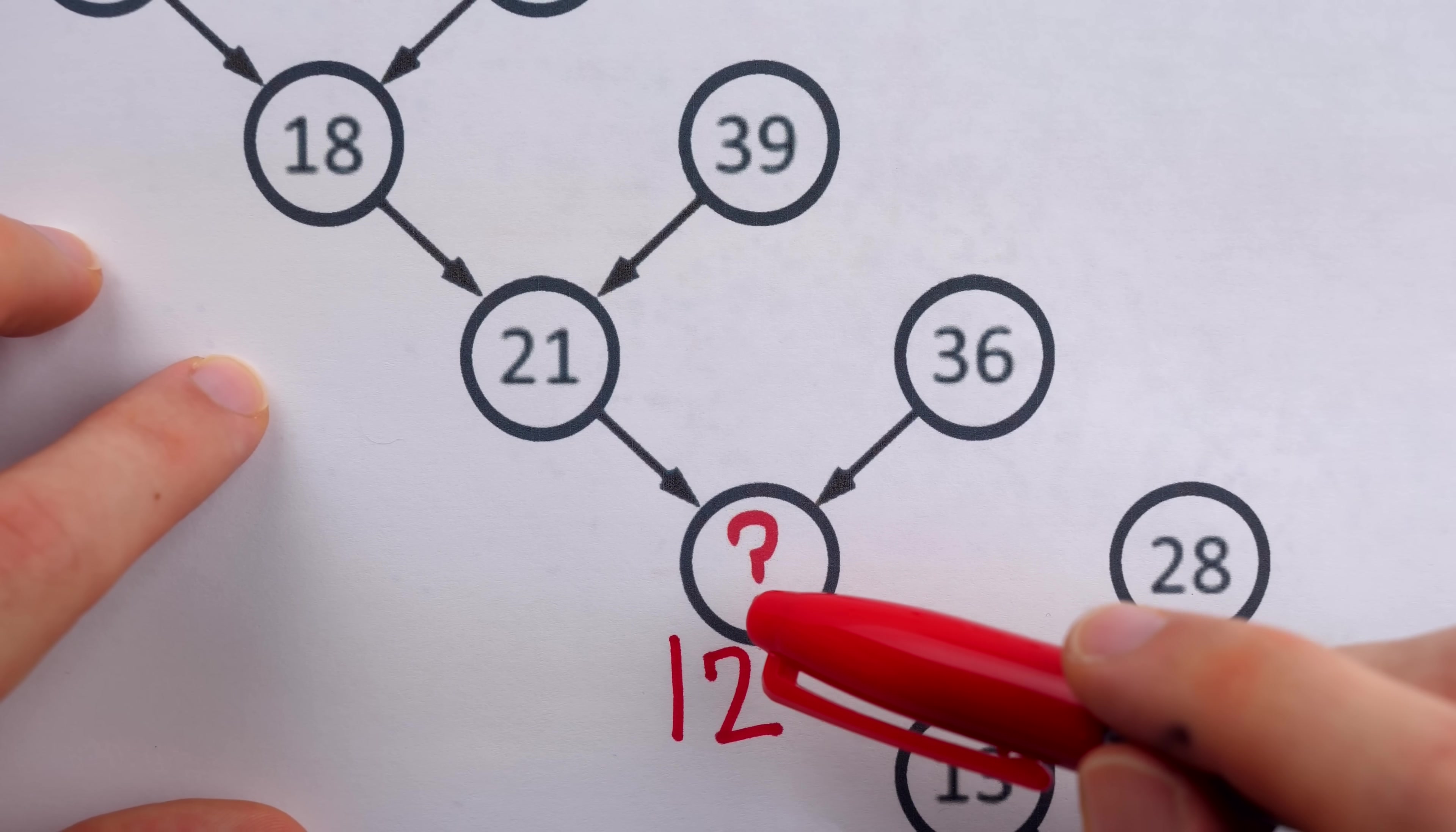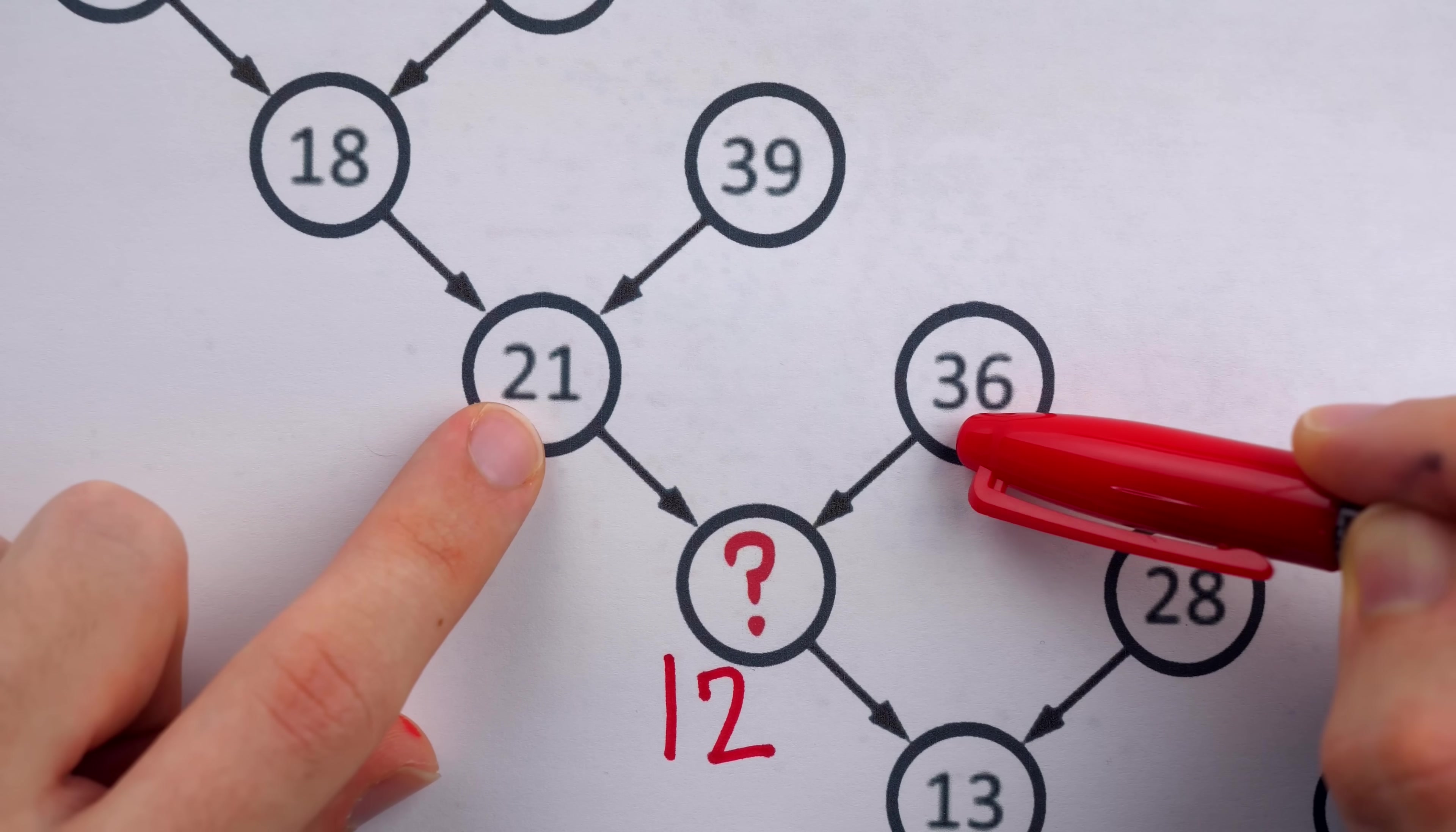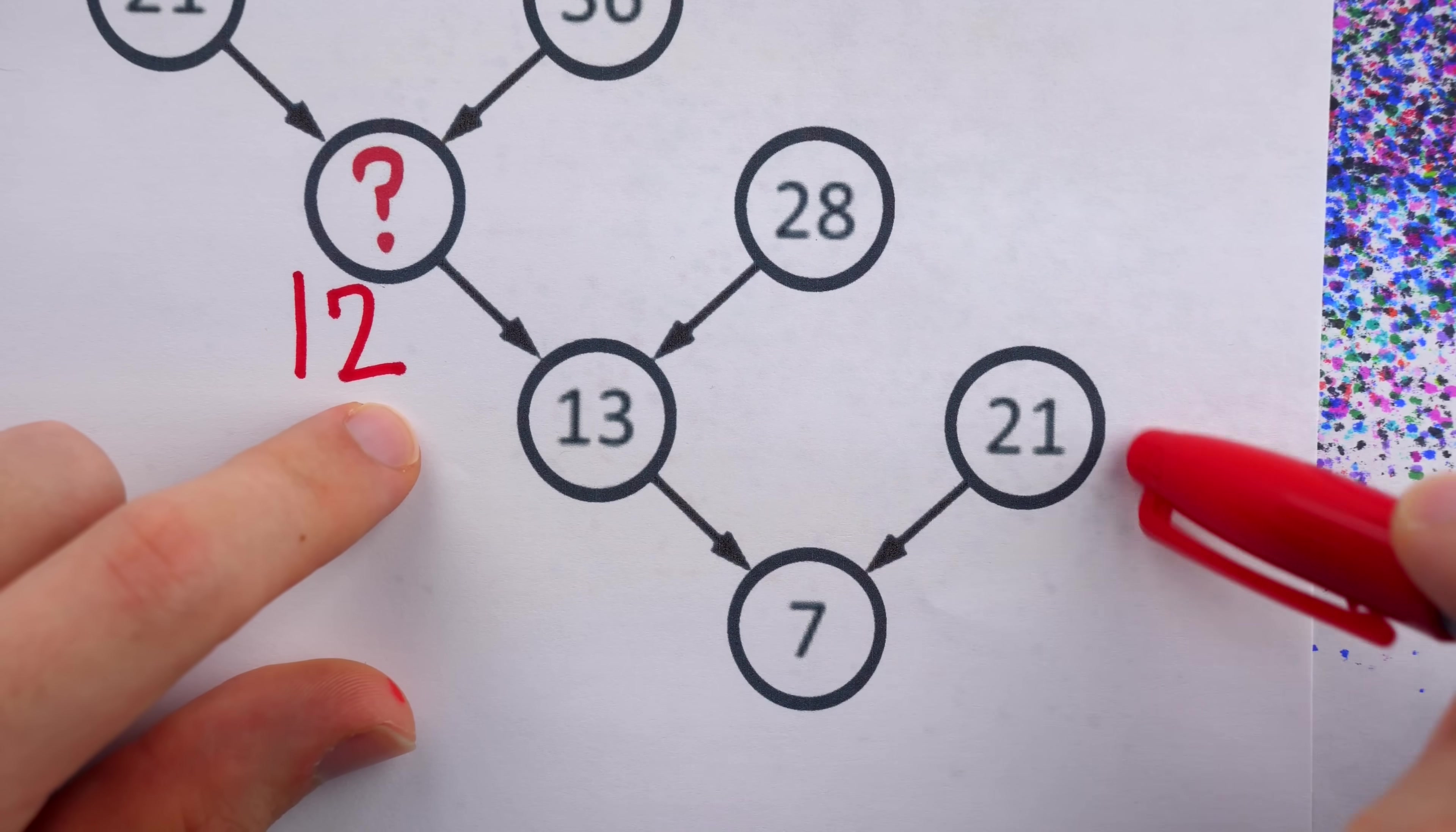How do we find the missing number? Well, it's just the sum of the digit sums of the two numbers above it. Two plus one is three. Three plus six is nine. Three plus nine is 12. And we can see that that agrees with this number. One plus two is three. Two plus eight is ten. Three plus ten is thirteen. And again, it's confirmed down here.